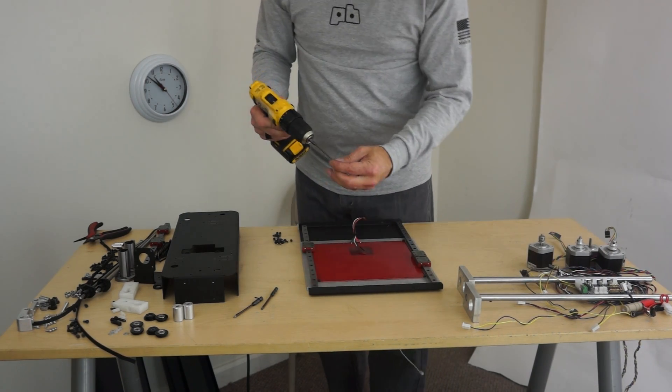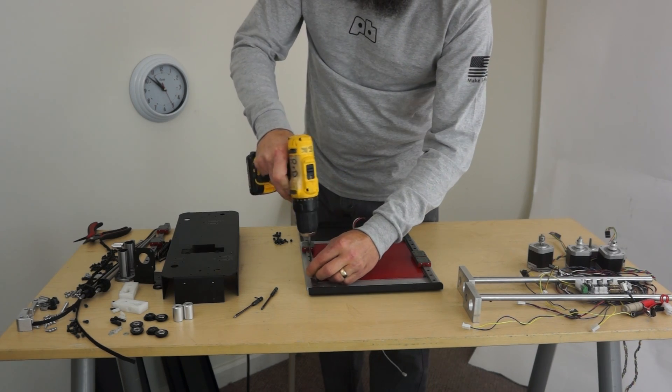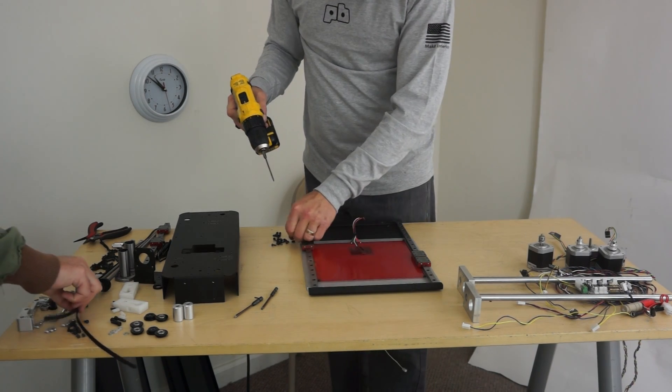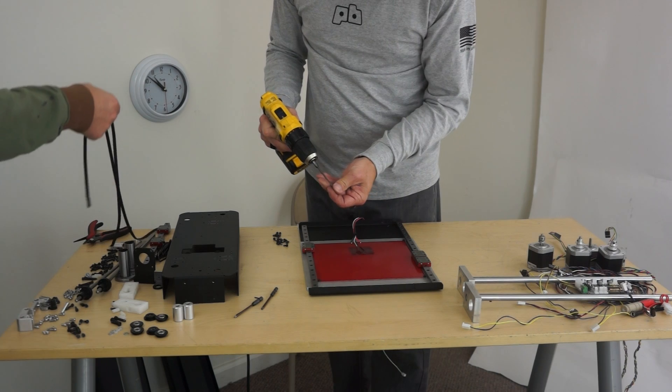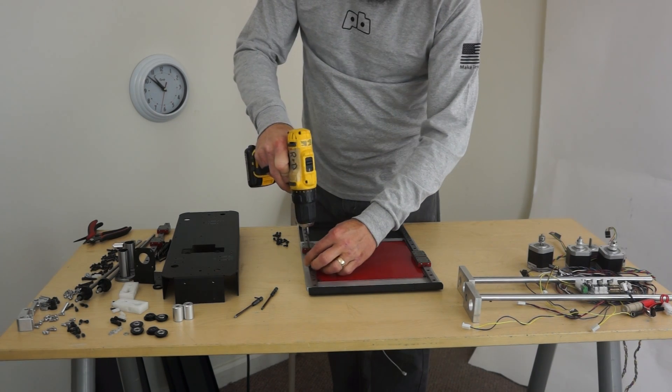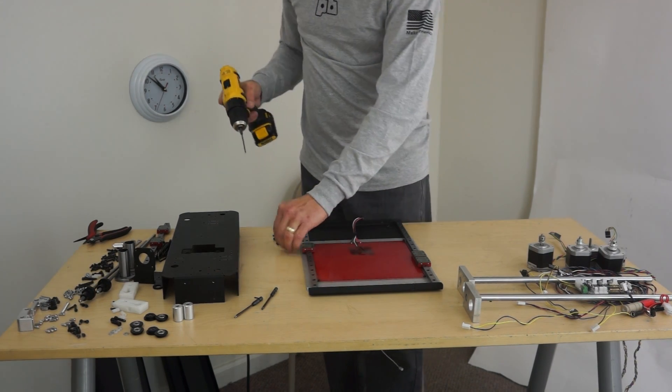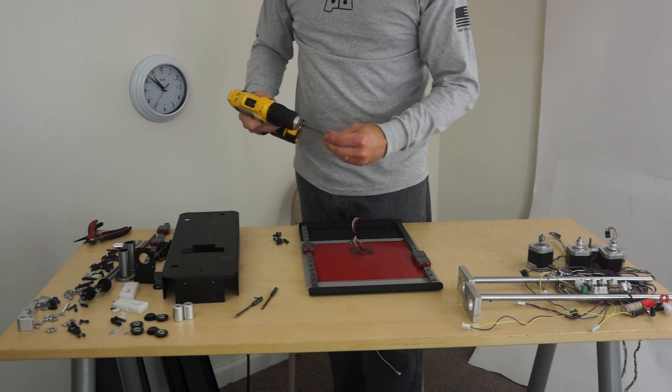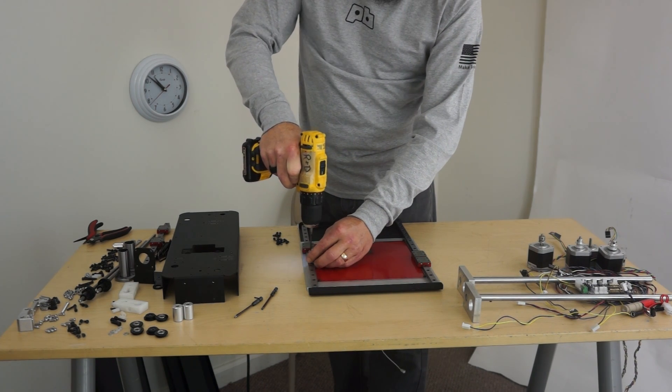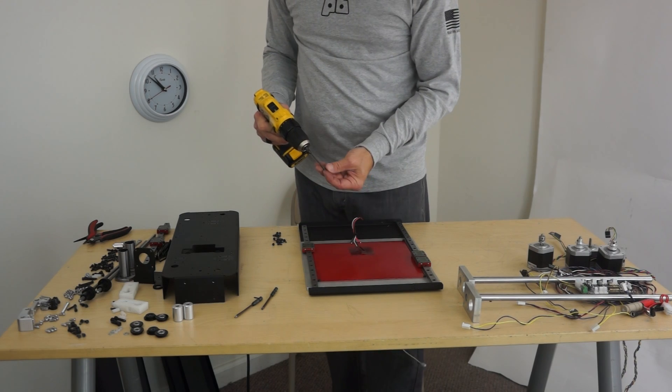What did we count? How many on these edges here? Thirteen each side. These are M3 8s, thirteen a side.